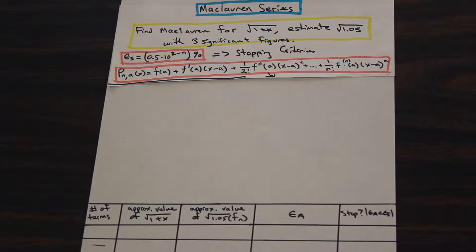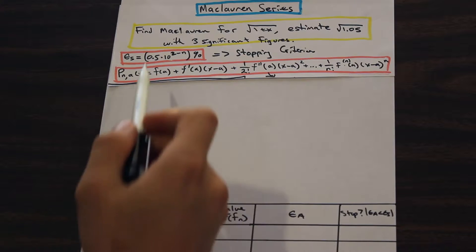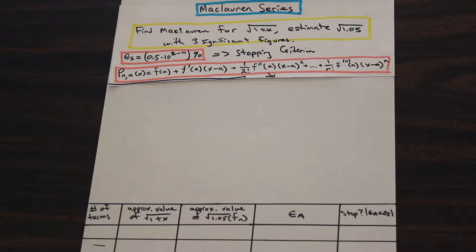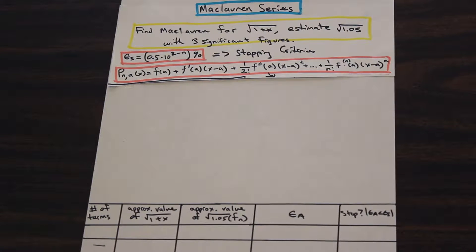So what do we have here? We have a question that asks us to find the Maclaurin series for √(1+x) and to estimate √1.05 with three significant digits. So that sounds pretty straightforward.